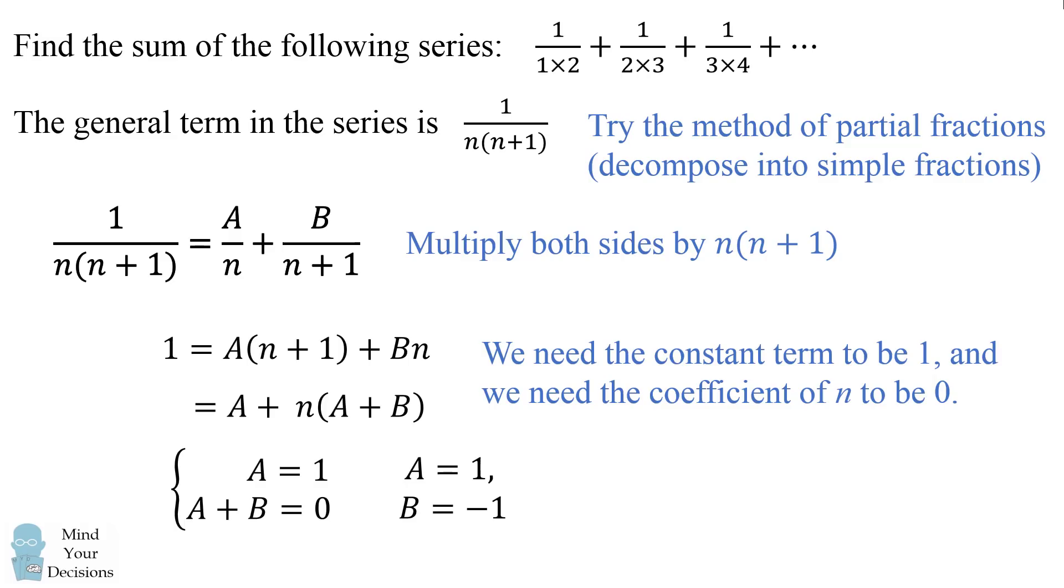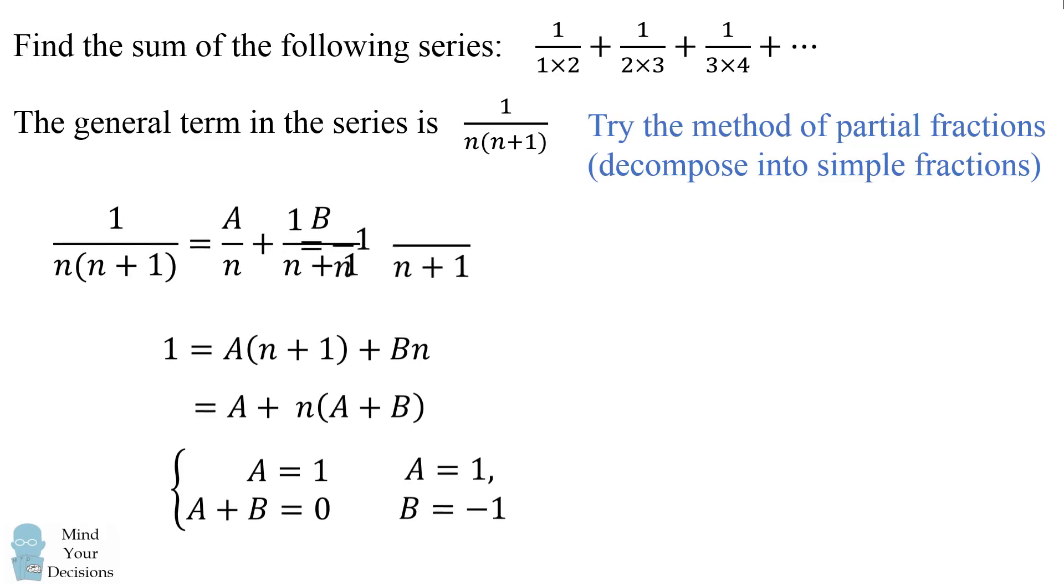So we figured out how to decompose our general term into simple fractions as follows. We have that 1 over the quantity n times n plus 1 is equal to 1 over n minus 1 over n plus 1.